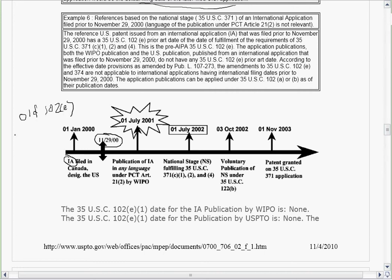We'll be looking for a 371(c)(1)(2)(4) date in the facts. That'll be our 102E date, but only on a patent. It won't apply to the publications.